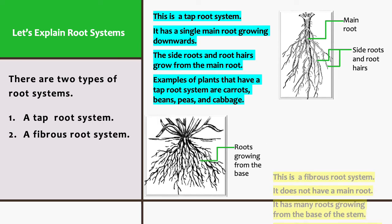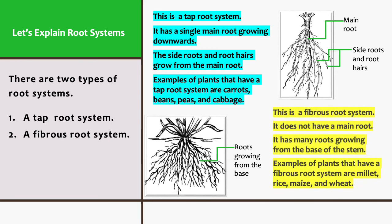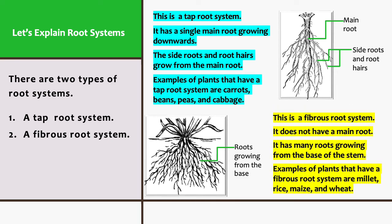This is a fibrous root system. It does not have a main root. It has many roots growing from the base of the stem. Examples of plants that have a fibrous root system are millet, rice, maize, and wheat.